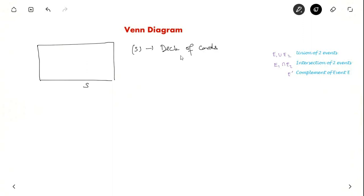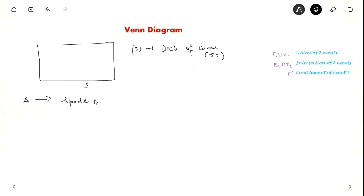Let us define Event A. Event A could be picking up a particular suit of cards, say picking up spade. We know that the sample space has 52 possible outcomes, because there are 52 cards in a deck of cards. Event A is picking up a spade, so there are 13 possibilities.